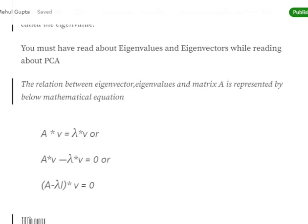Now moving on to eigenvalue decomposition. The relationship between eigenvector, eigenvalues and actual matrix is represented by this particular equation: A into V equals to lambda into V, where lambda is the eigenvalue.